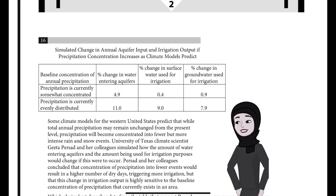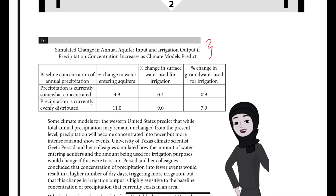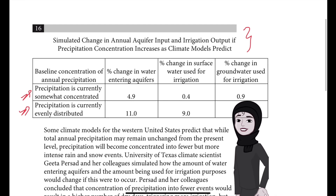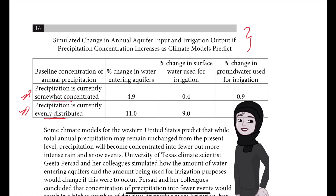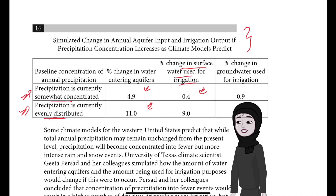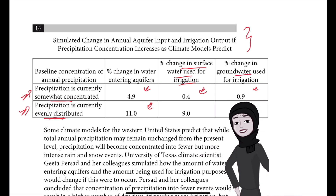Question number 16 has a table with the heading: 'Simulated change in annual aquifer input and irrigation output if precipitation concentration increases as climate models predict.' The table shows two baseline scenarios: precipitation currently somewhat concentrated and currently evenly distributed. The percentage change in water entering aquifers is 4.9% for somewhat concentrated and 11% for evenly distributed. Percentage change in surface water use for irrigation is 0.4% for somewhat concentrated and 9% for evenly distributed.